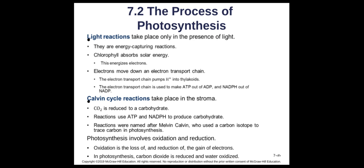We can break photosynthesis into two generalized reactions. First, there are the light reactions, which take place when light is present — you need light to do these. Second, there's the Calvin cycle, sometimes called dark reactions, though that's misleading — it's not that they happen at night or in the dark, just that they don't require light. The Calvin cycle reactions happen in the stroma of the chloroplast.